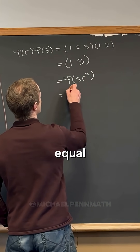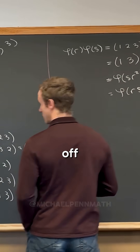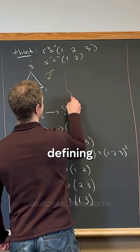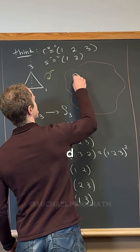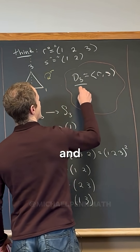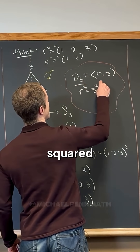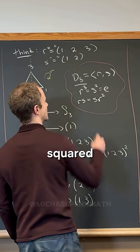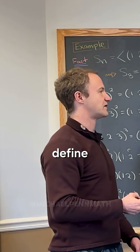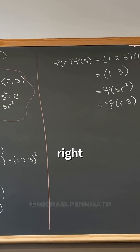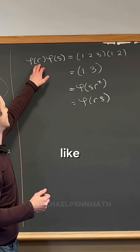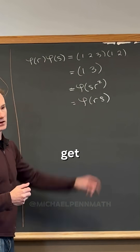So phi(sr²) equals phi(rs), based on the dihedral group rule. Recall the defining characteristic of D3: it's generated by r and s, with r³ = s² = identity and rs = sr². Those three conditions define the dihedral group. And this is exactly what we need — it confirms the isomorphism, showing you can compose these two functions and get multiplication inside.